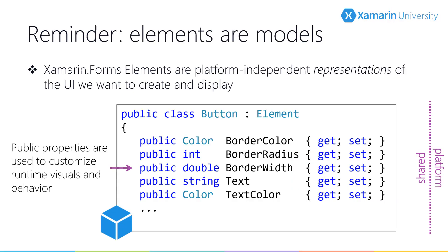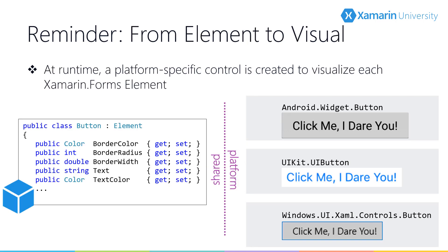Let's take a quick look at the Xamarin Forms rendering architecture — we've seen this before in classes like XAM120 and XAM330, so we'll just do a bit of a review. For most elements, we can customize the appearance of the generated control by setting some properties, and where possible the platform controls will be adjusted to respect the property values. You can think of these elements as platform-independent models which represent the controls we actually want to generate at runtime. Xamarin Forms takes our element definition and turns it into a native control.